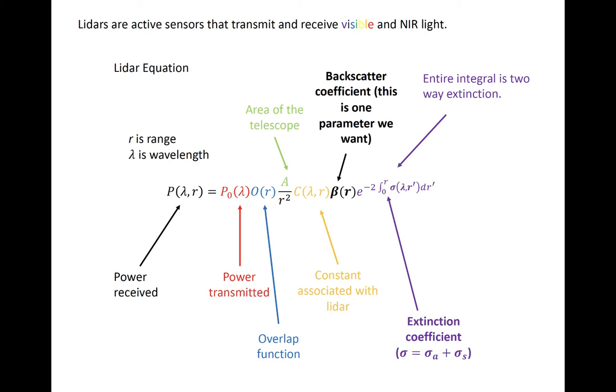The most useful variable that we generally want to derive from the observed power is the backscatter coefficient, denoted by the bolted beta in the equation. It is conceptually analogous to the radar reflectivity factor in the radar equation. Getting beta requires that we know values for the remainder of the terms in the lidar equation.